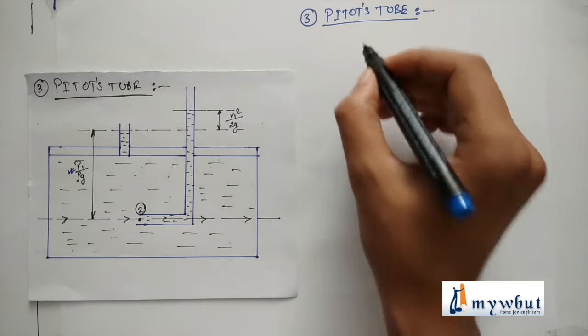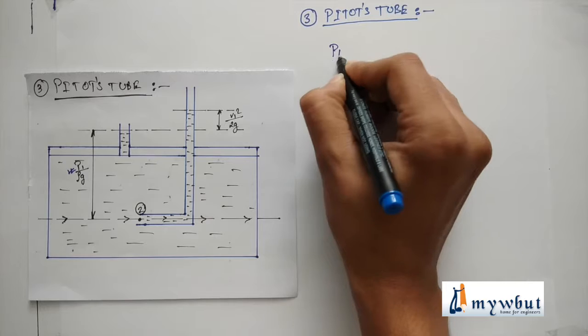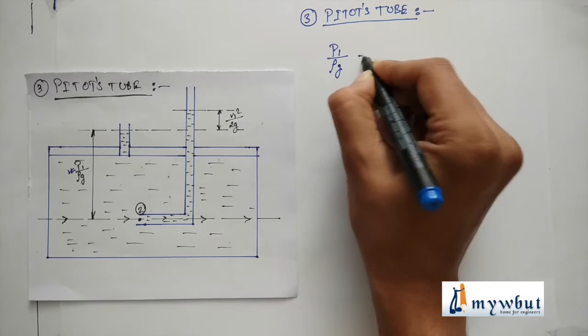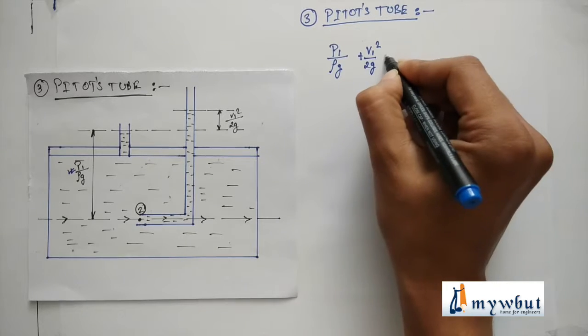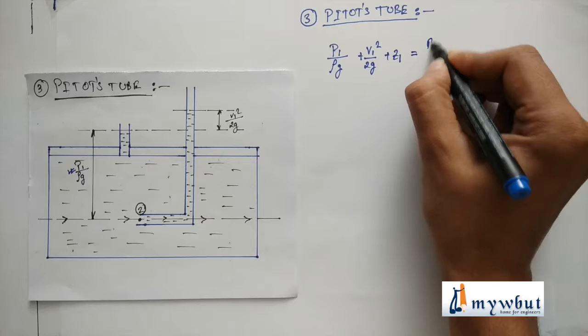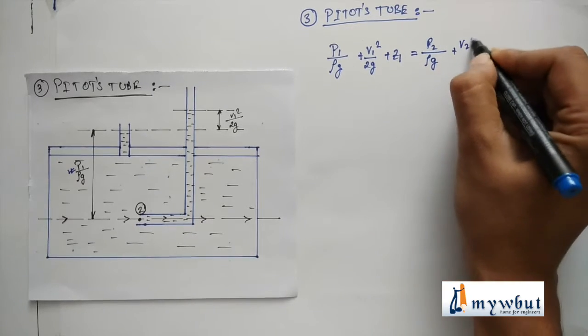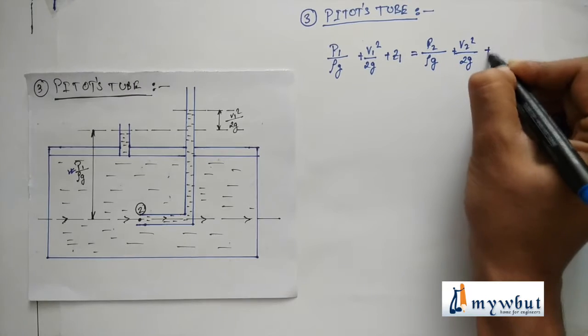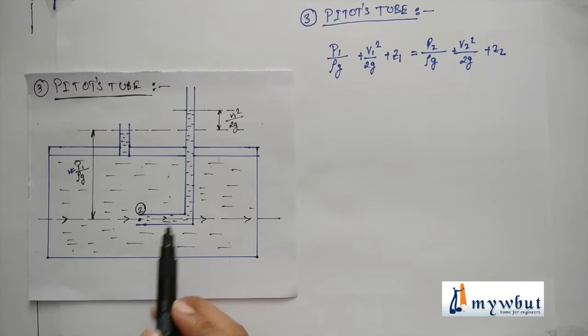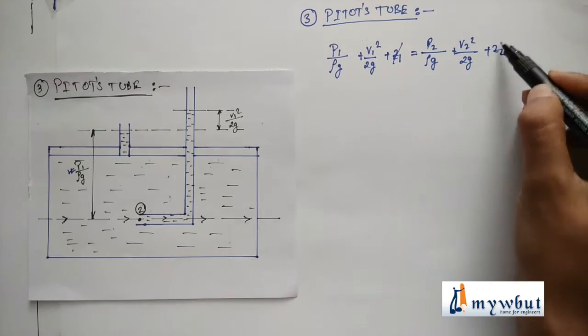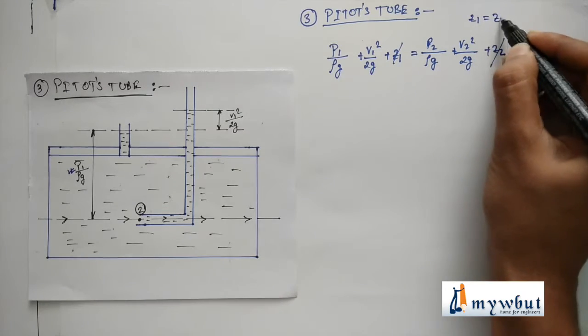This difference is taken to be as p₁ by ρg and this difference is taken to be as v₁ square by 2g. So the derivation is a very small one. By applying Bernoulli's theorem we get p₁ by ρg plus v₁ square by 2g plus z₁ is equal to p₂ by ρg plus v₂ square by 2g plus z₂. Since 1 and 2 both are in the same potential line, these two get cancelled as z₁ is equal to z₂.